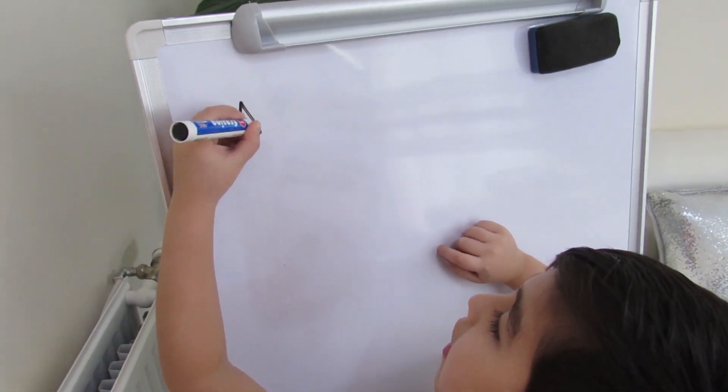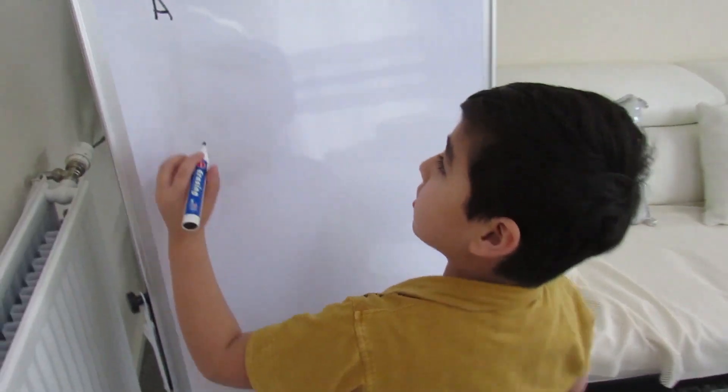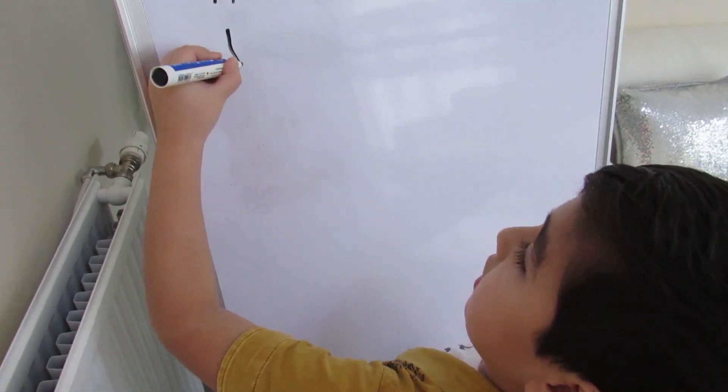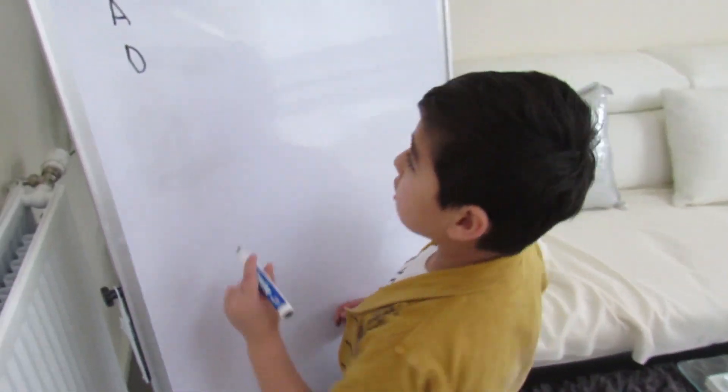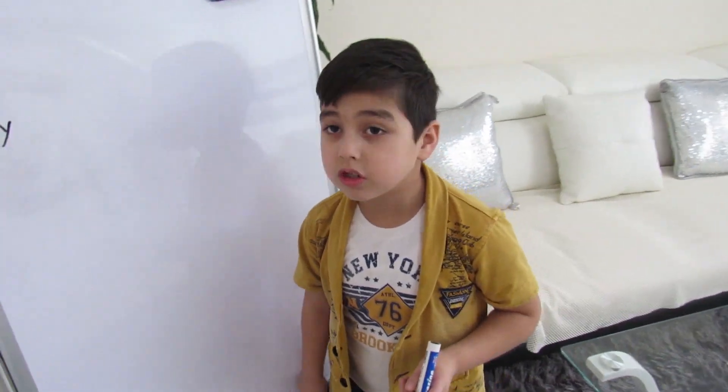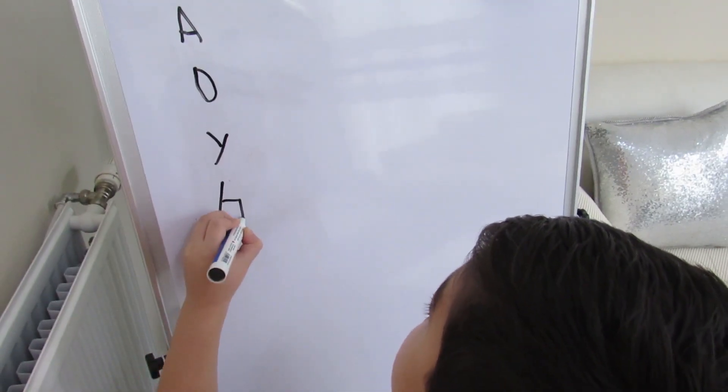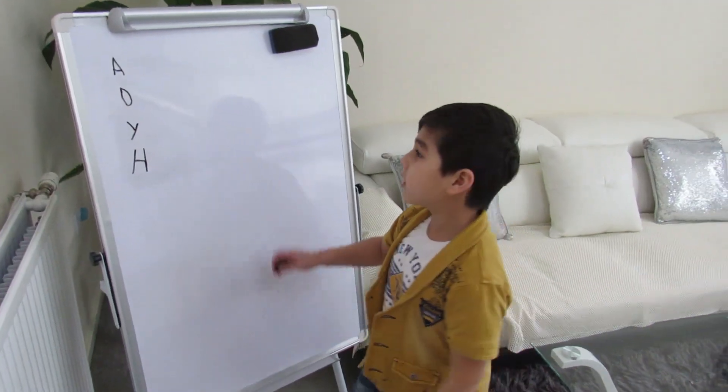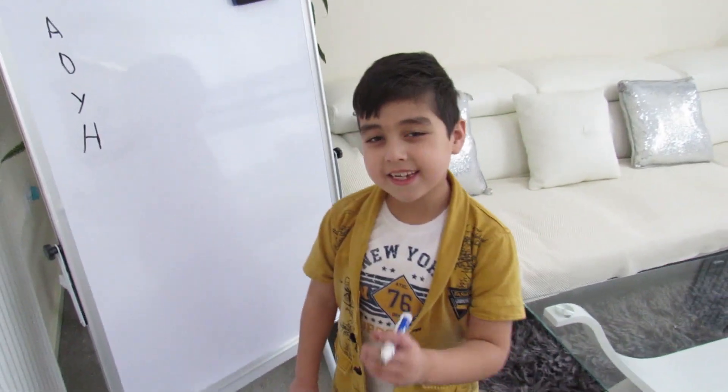The first one starts with A. The second one starts with D. The third one starts with Y. The last one starts with H. Think what is A, D, Y, H. Did you think it?